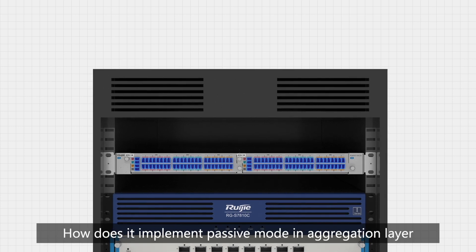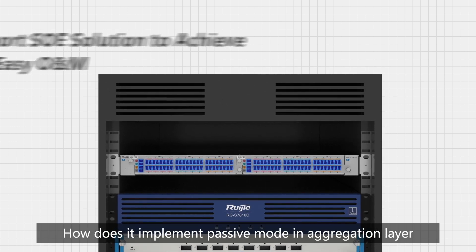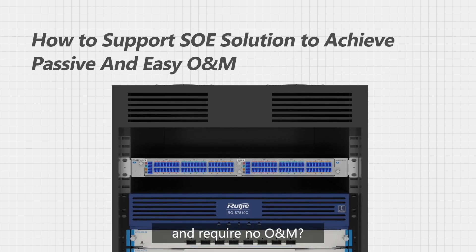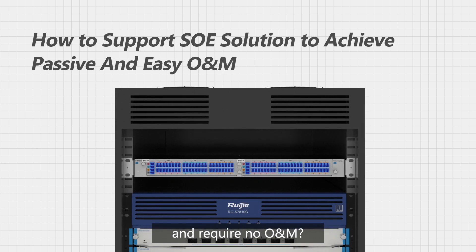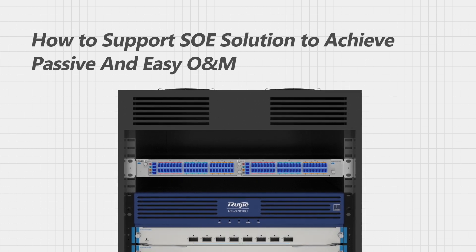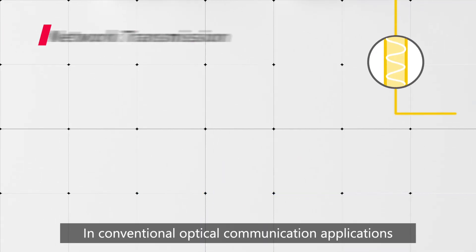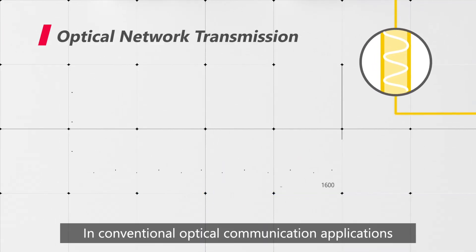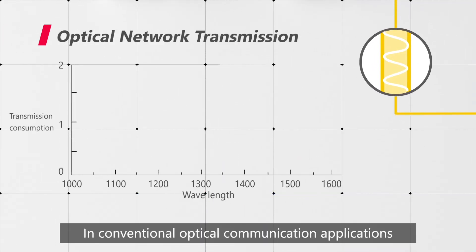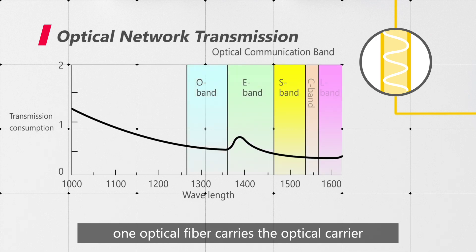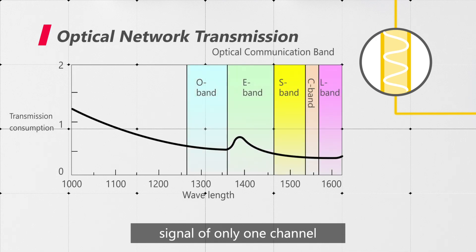How does it implement passive mode and aggregation layer in the simplified optical Ethernet solution and require no ONM? Let's start with the transmission of optical networks. In conventional optical communication applications, one optical fiber carries the optical carrier signal of only one channel.